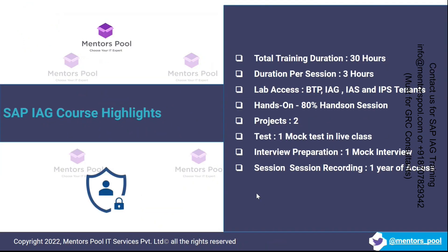Let's have highlights first. This training is going to be 30 hours, with each session duration of 3 hours, so we'll conduct 10 sessions. You'll be given live access to SAP BTP, IAG, IES, and IPS where you can do hands-on. This training is going to be 80% hands-on, where the trainer will walk you through all the configuration in a live class and you'll have to follow along and do the configuration and practice on your own.